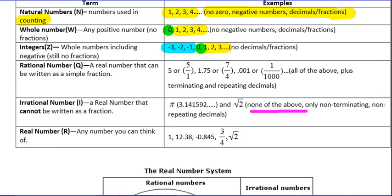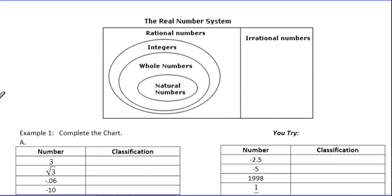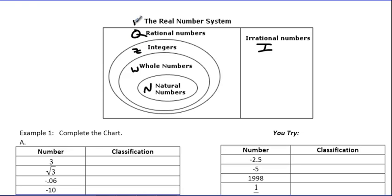Which brings me to this diagram. Notice that irrational numbers are placed off to the side. We use the letter I for short. Over to this side, we have our natural numbers, which are inside of our whole numbers, which is inside of the integers, which is inside of the rational numbers, which is all part of the real number system. Both irrational and rational are part of the real number system.